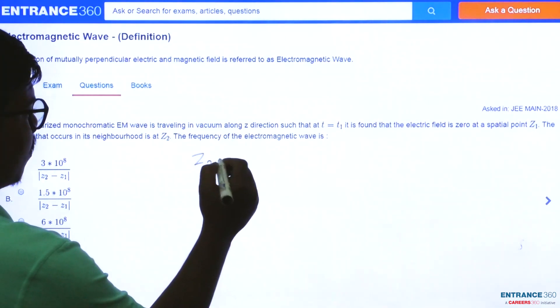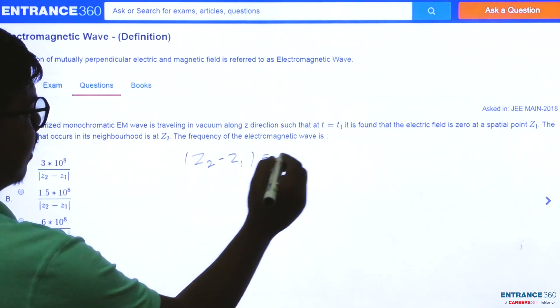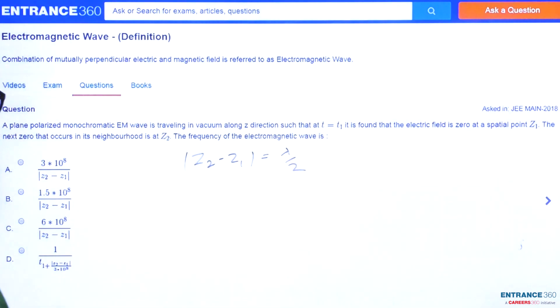So we get z2 minus z1 as lambda by 2. So we want to find out the frequency of the electromagnetic wave. So here are the four options.